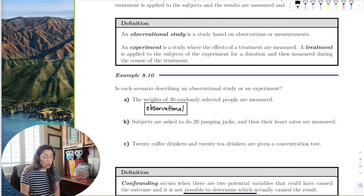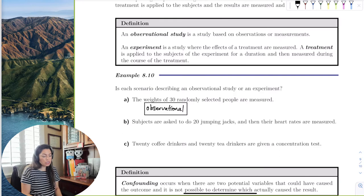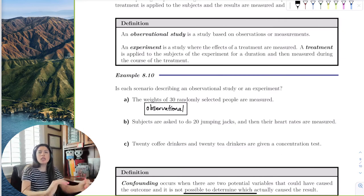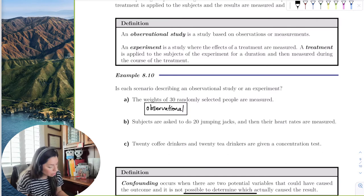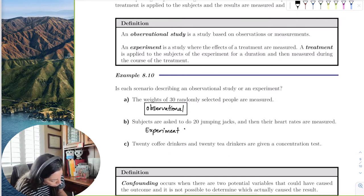Subjects are asked to do 20 jumping jacks and then their heart rates are measured. So notice that right away, they're not observing what already exists, right? They're saying, come in, now go do, I'm going to do something. Go do 20 jumping jacks. Okay, and then come back and let me record something. That's going to be a treatment and that's an experiment. So this is an experiment where the treatment is 20 jumping jacks.